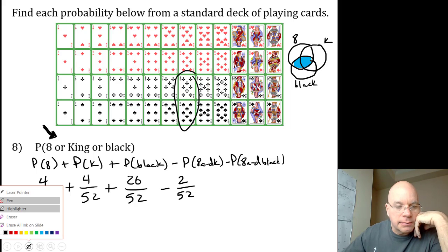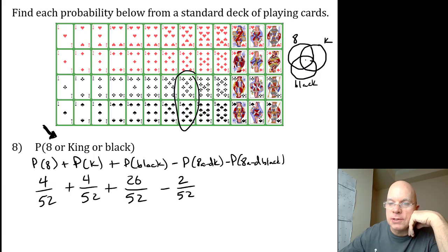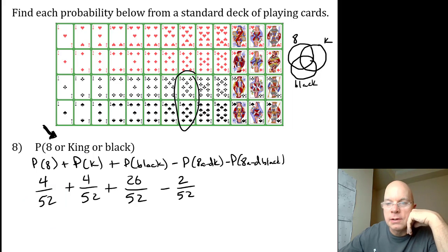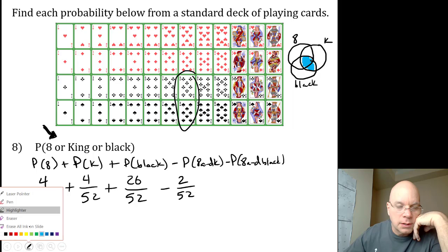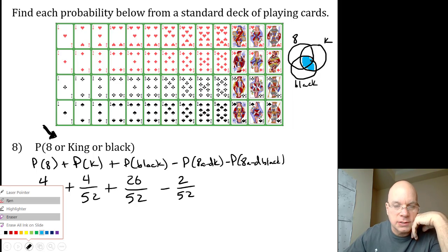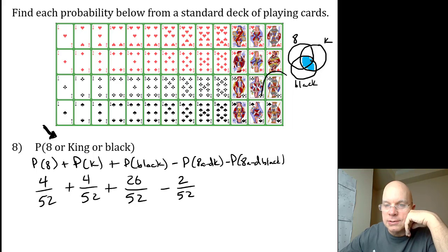Now let me erase this intersection and focus on the only other intersection we haven't yet considered, which is the probability of being a king and a black card. Well, of course, that intersection does exist because these two kings are black cards. So we're going to subtract the probability of king and black. We're going to subtract those two fifty-seconds.